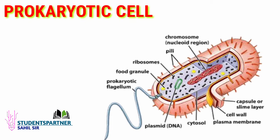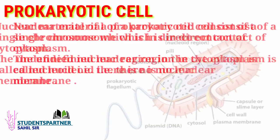Prokaryotic cells don't have a true nucleus — instead they have something like a nucleus, called a nucleoid. Their nucleus region contains only chromosomes. As you can see in the figure, they have a chromosome, ribosomes, DNA (cytosol), cell wall, plasma membrane, and the outermost layer is called the capsule. Flagella are also present. The nucleus region has no nuclear membrane.